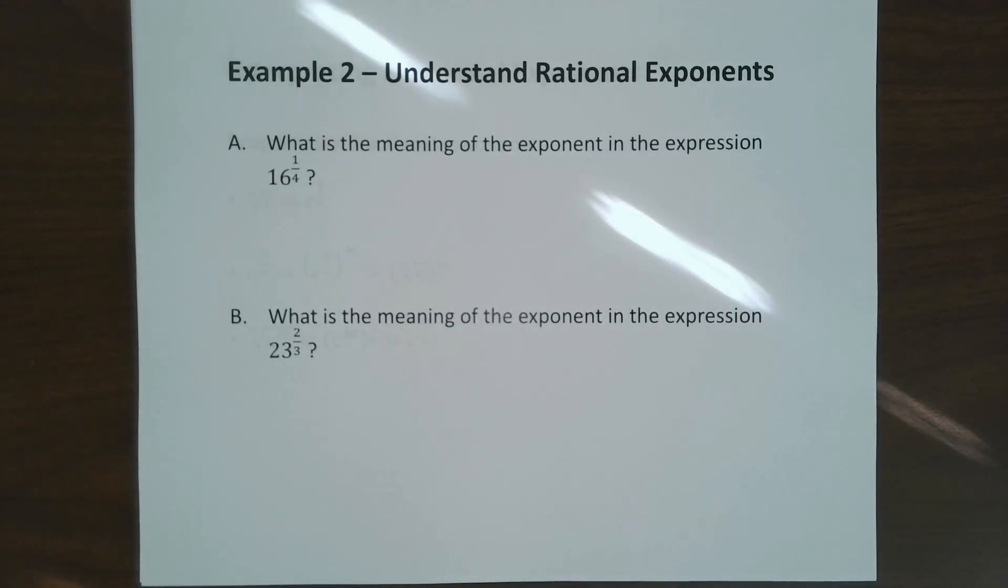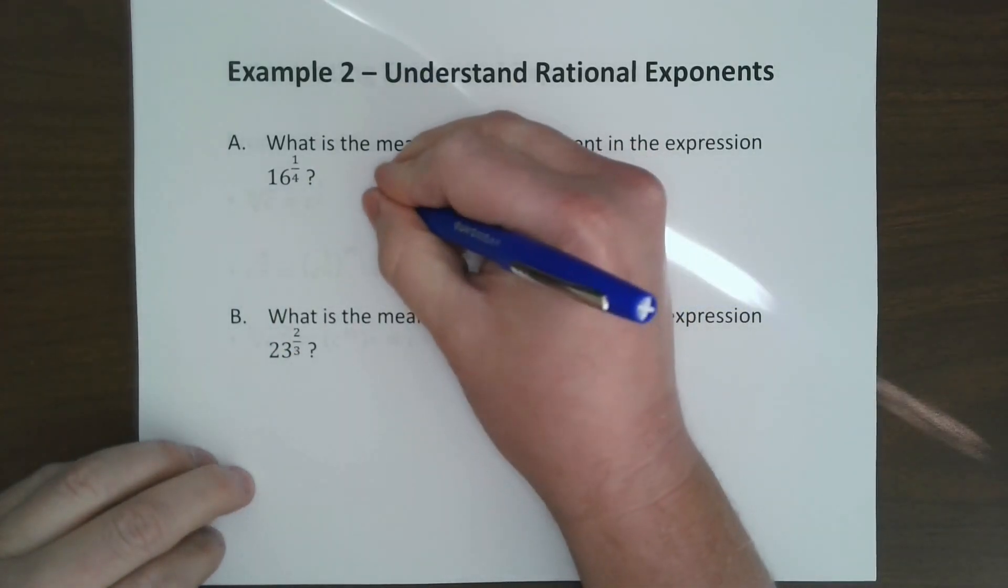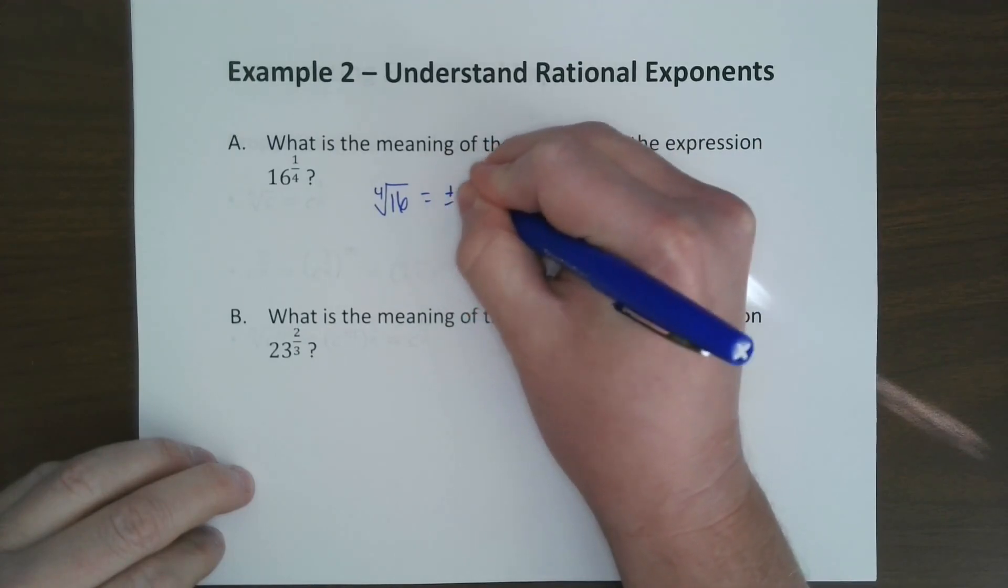What is a rational exponent? A rational exponent is just another way of writing a root. For example, 16 to the one-fourth is the same as saying the fourth root of 16, which we've already said is plus or minus 2.